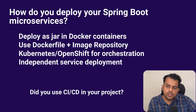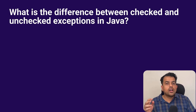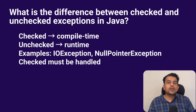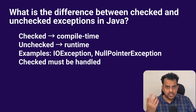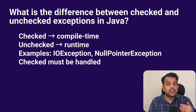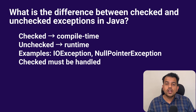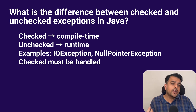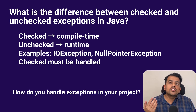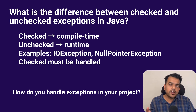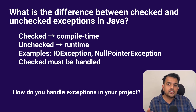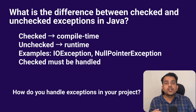Now a tricky Java question: what is the difference between checked and unchecked exceptions in Java? Checked exceptions are checked at compile time — for example, IOException or SQLException. Unchecked exceptions occur at runtime — for example, NullPointerException or ArithmeticException. We must handle checked exceptions using try-catch or by declaring them in the method signature. Unchecked exceptions don't require mandatory handling. A follow-up: how do you handle exceptions in your project? We use a global exception handler with @ControllerAdvice and @ExceptionHandler annotations to send consistent error responses.